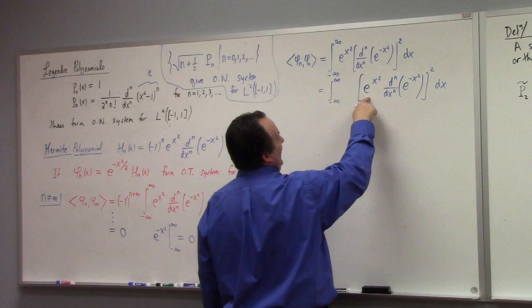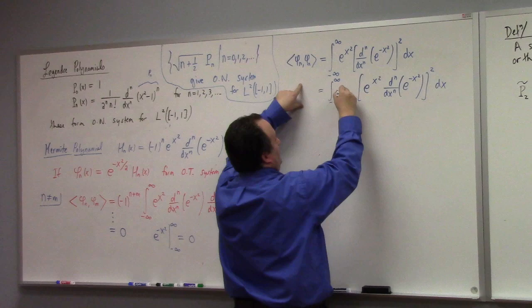And so since he did that, he's basically adding two, right? So this becomes e to the minus x squared.